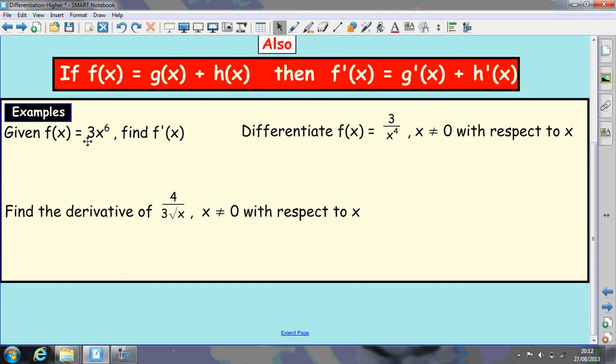So these examples here we've got f of x equals 3x to the power of 6. If we differentiate this we multiply down to get 18 and reduce by 1 to get 5. So f dash of x equals 18x to the power of 5.